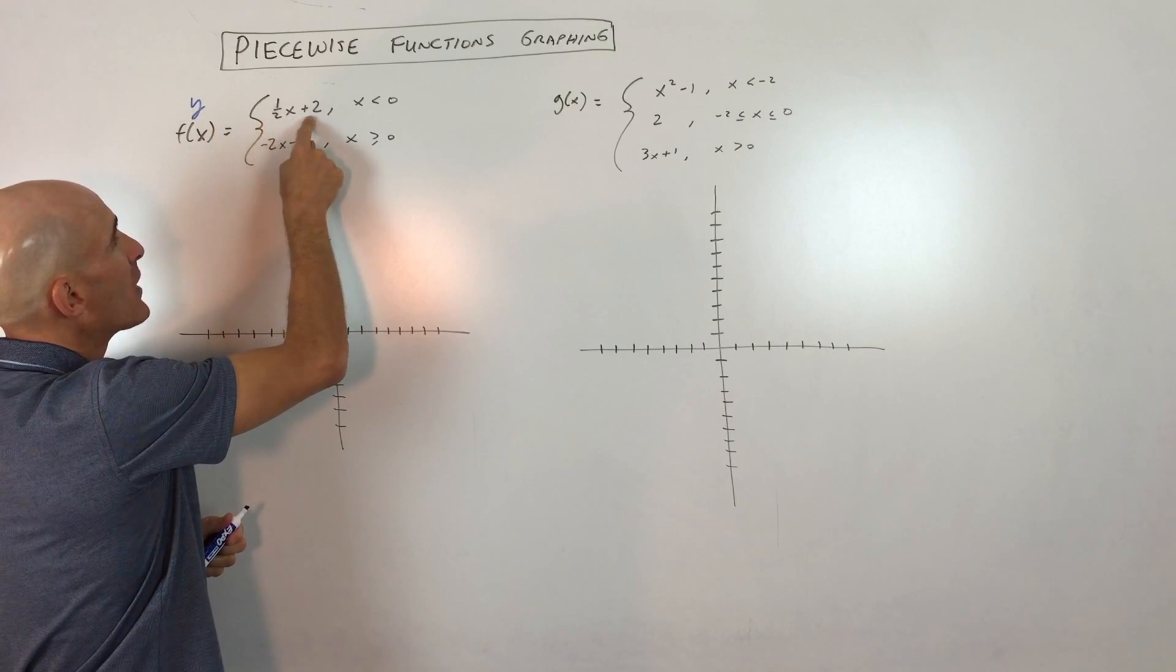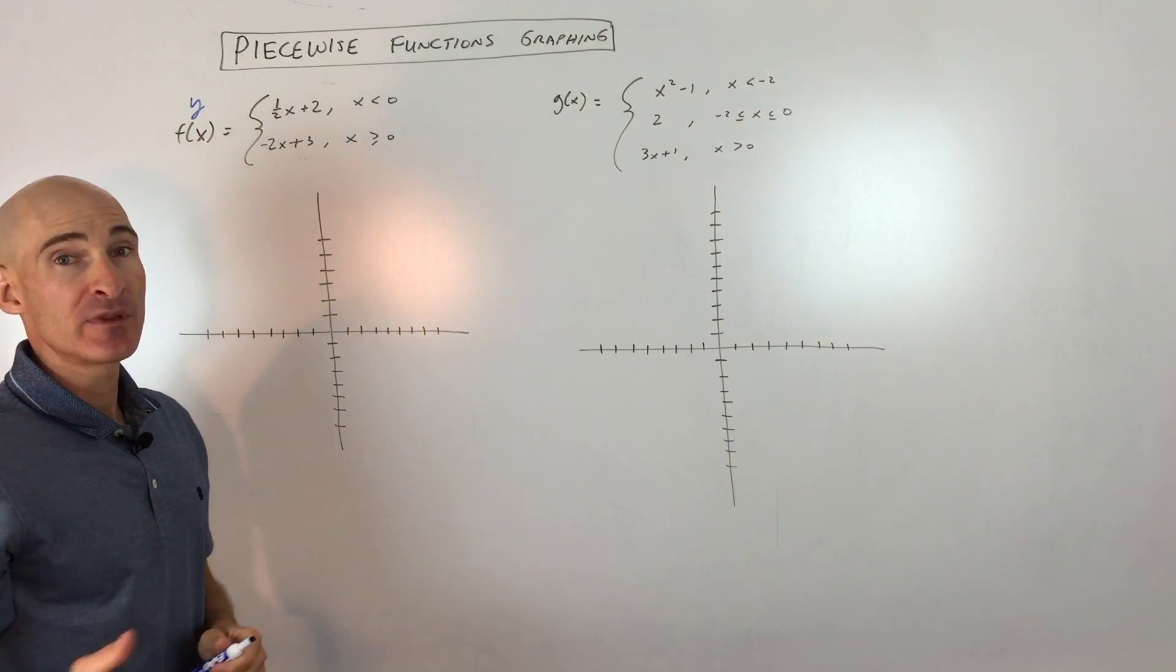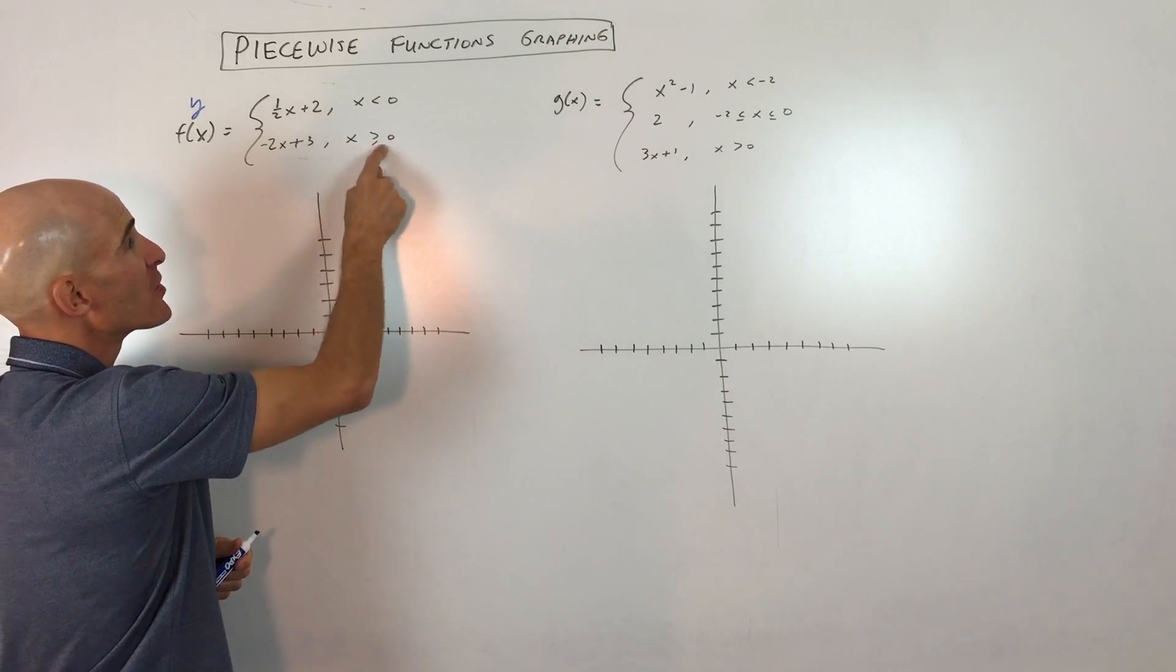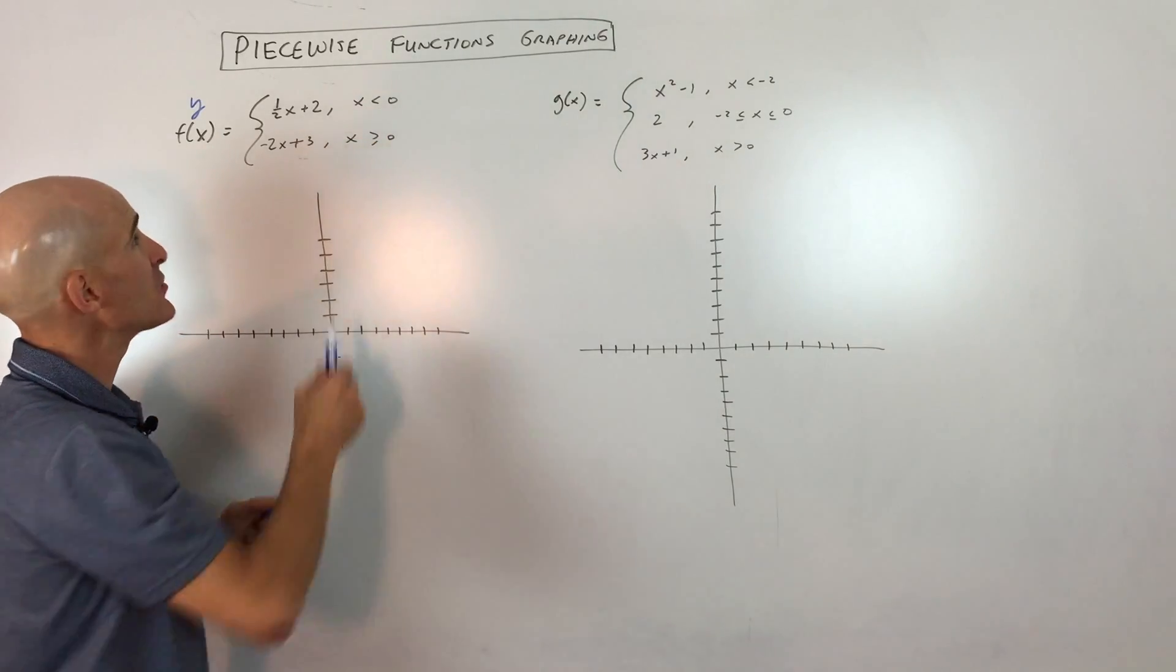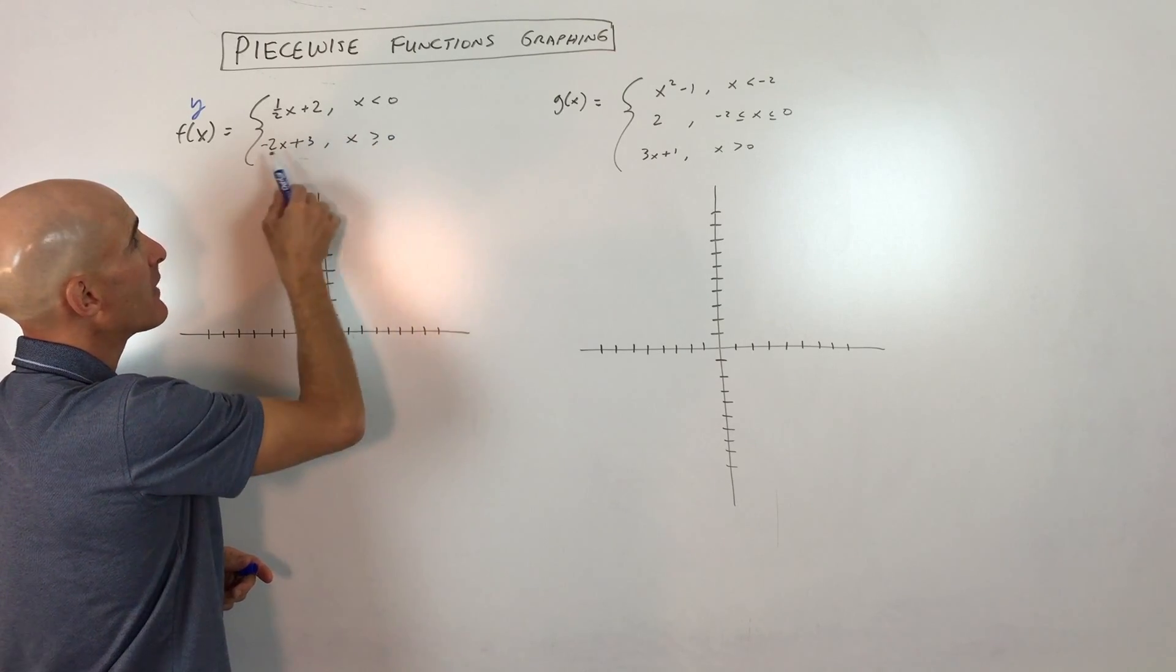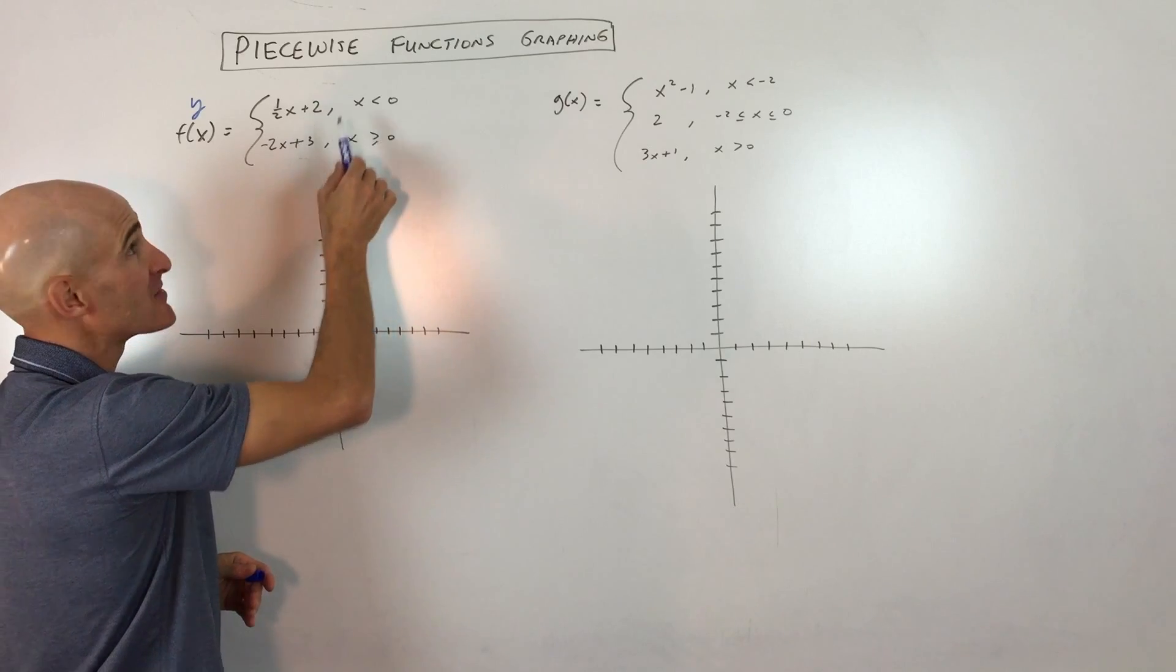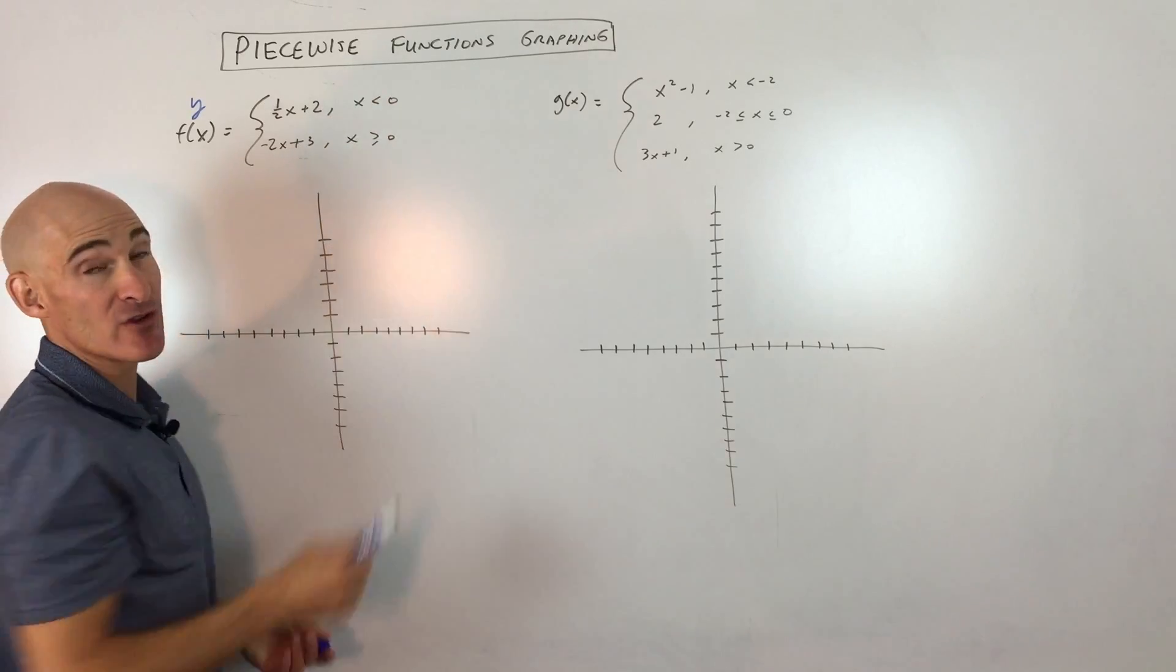And this is really like y equals 1/2x plus 2 and y equals negative 2x plus 3, but they put these domain restrictions over here next to them. And that just tells you that we only want to be on this part of the graph when x is less than 0. And then we want to be on this part of the graph, or this piece you could think of the graph since it's a piecewise function, when x is greater than or equal to 0.